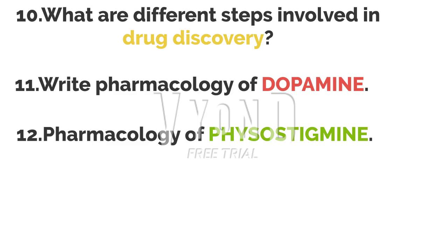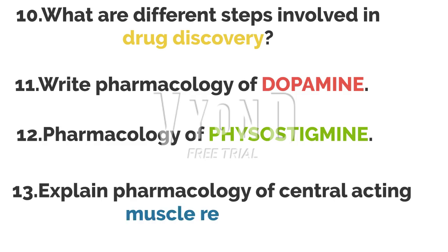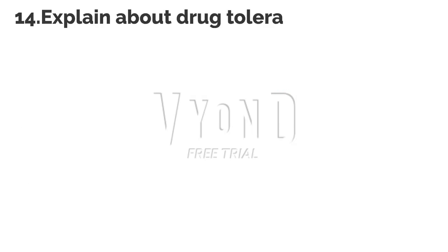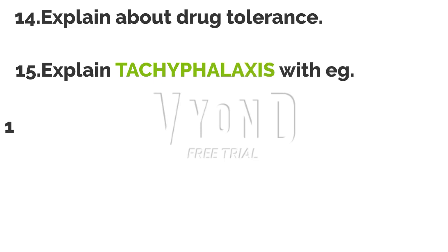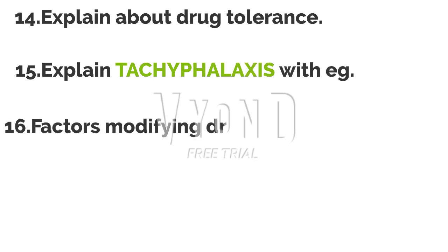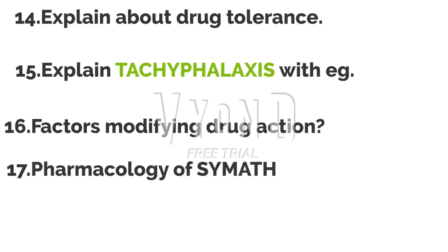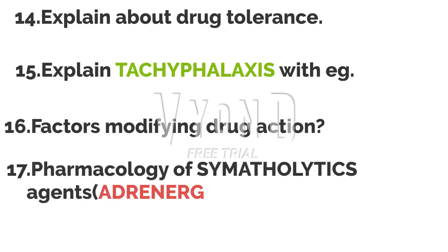The eleventh question: pharmacology of dopamine. Twelfth: pharmacology of physostigmine. Thirteenth: explain pharmacology of centrally acting muscle relaxants. Fourteenth: explain about drug tolerance. Fifteenth: explain tachyphylaxis with example. Sixteenth: factors modifying drug action. Seventeenth important question: pharmacology of sympatholytic agents — also called adrenergic blockers. Don't get confused; remember the synonyms.